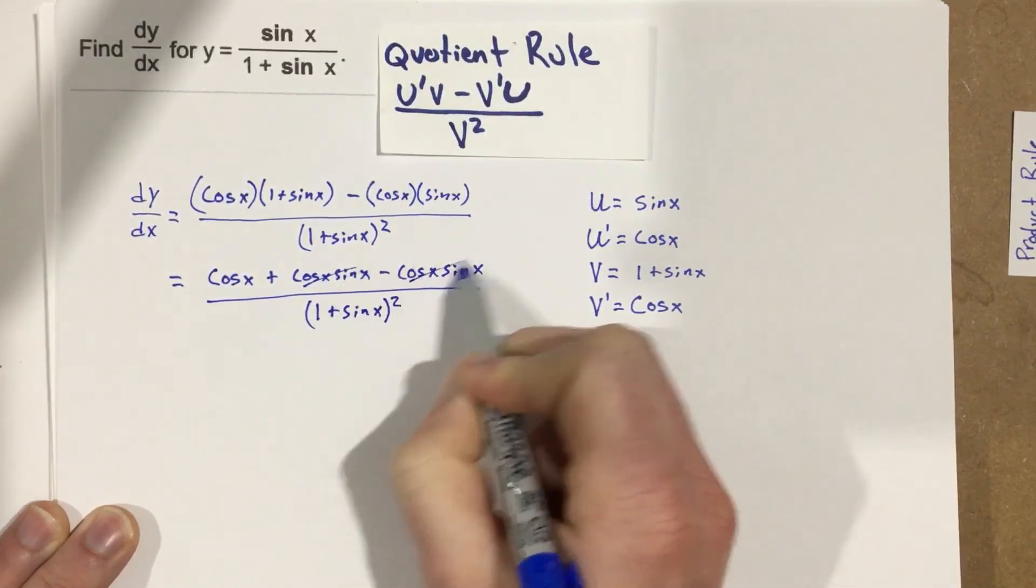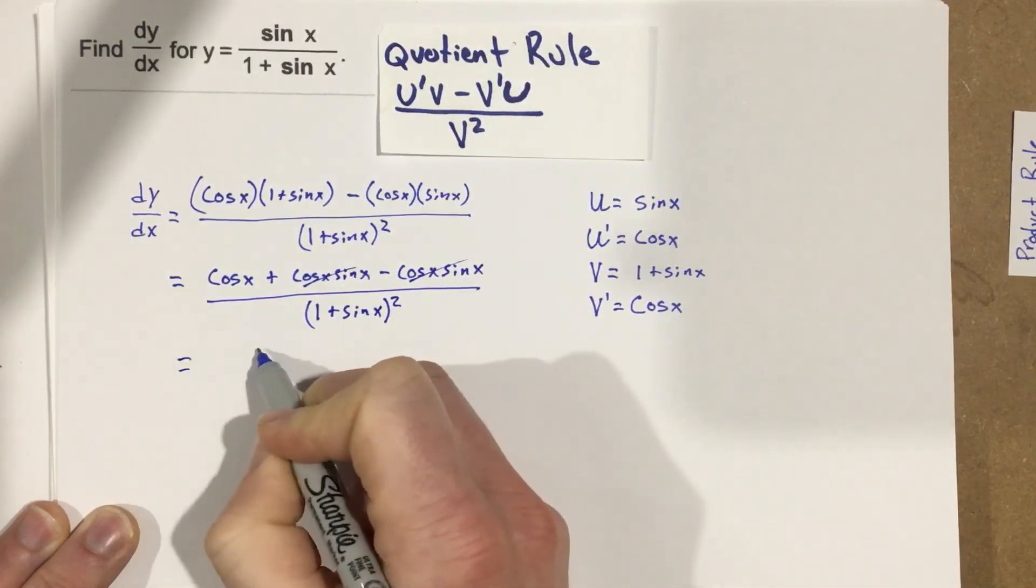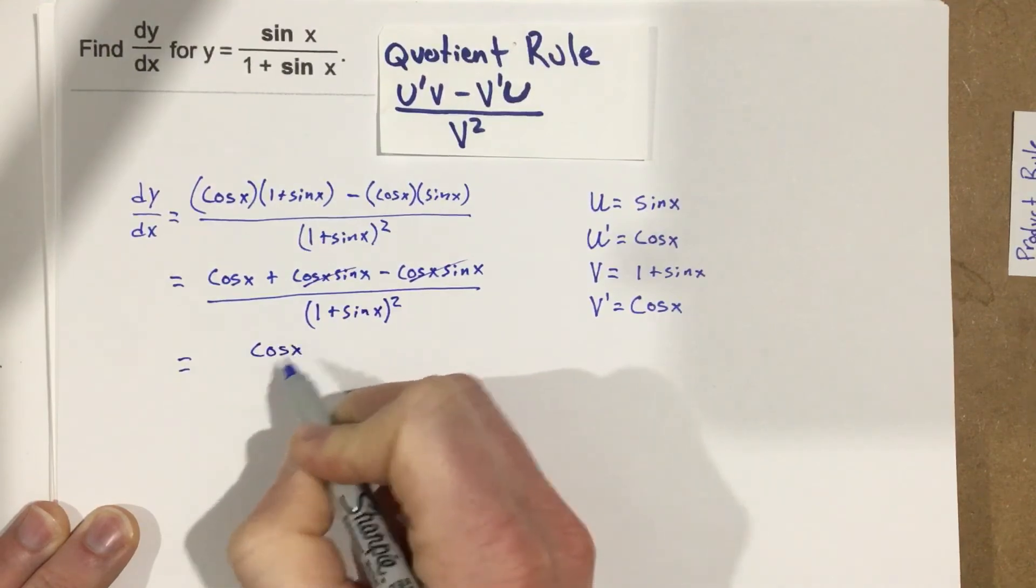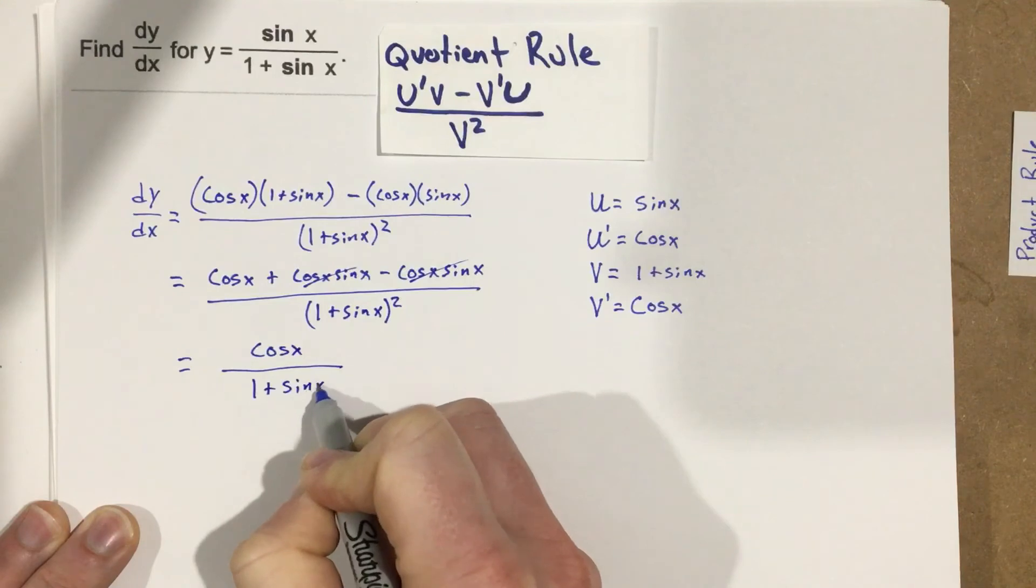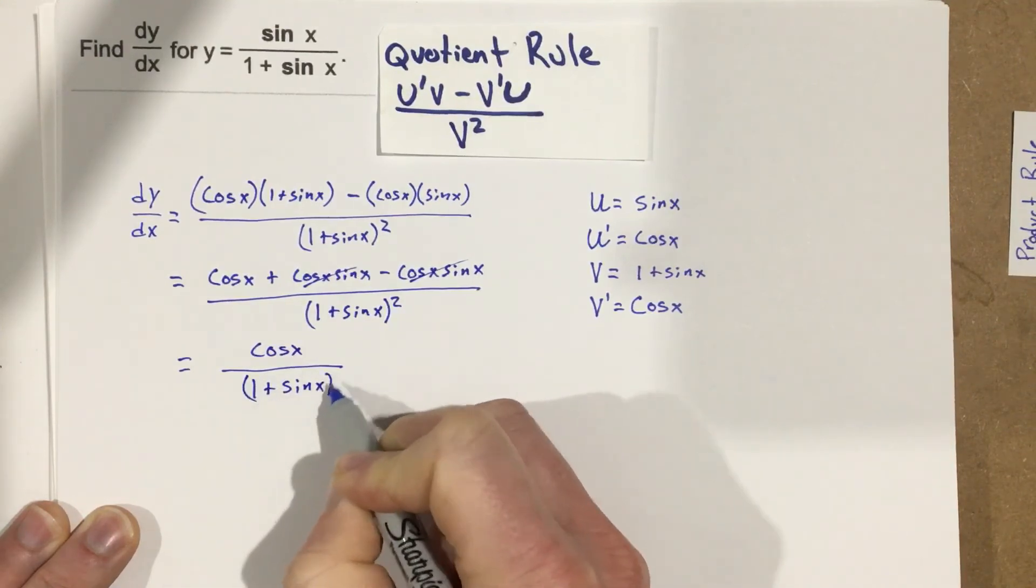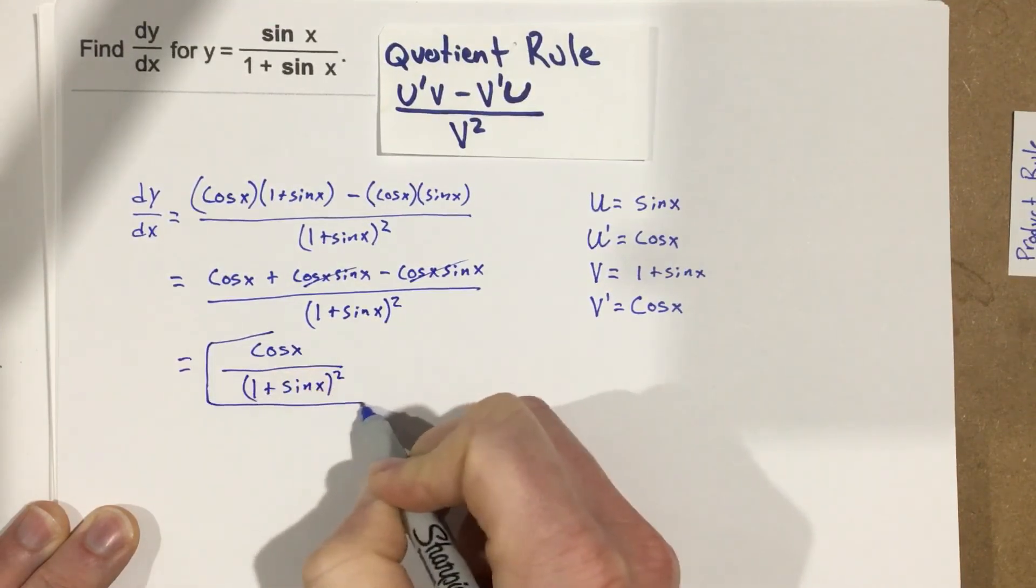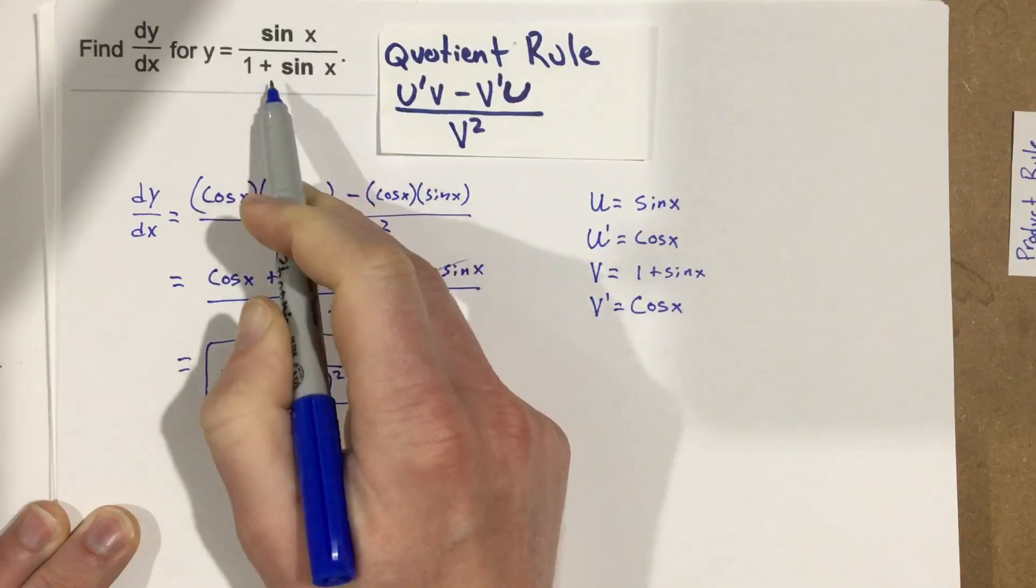You can see that this cancels here, and we're left with cosine x over 1 plus sine x squared. So this is the derivative for our original function here, using the quotient rule.